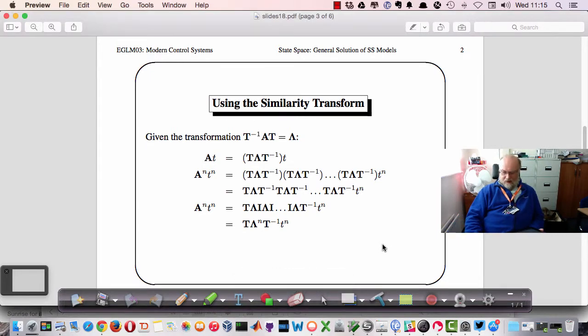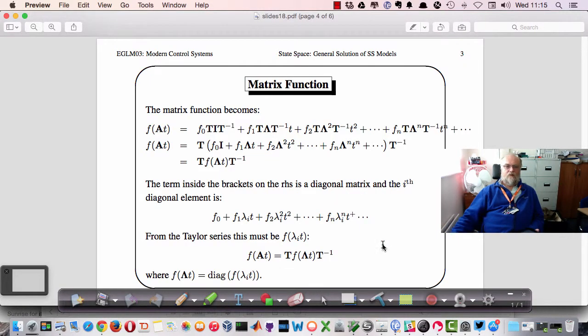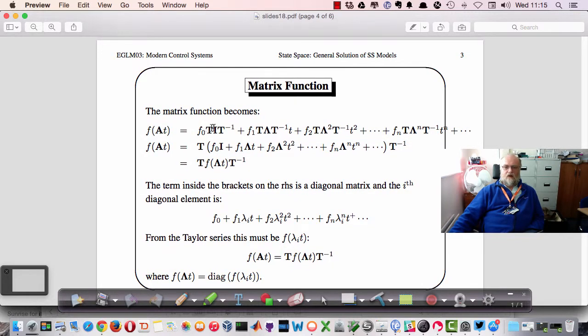Let's see how this applies to state space models. If we have f times A of t which we want to compute a Taylor series, then we produce the first one which is going to be T I T inverse, which is just T times T inverse, which is just I multiplied by t. So we take T outside the brackets and we get f0 I, f1 lambda t, f2 lambda squared t squared and so on, post-multiplied by T inverse.